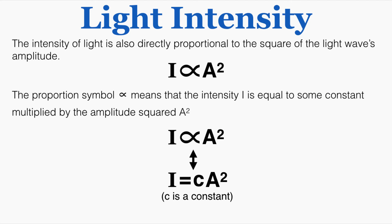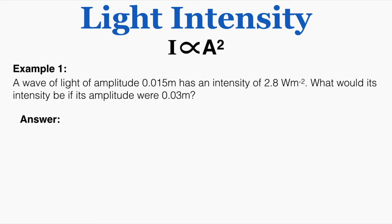The intensity of light is also directly proportional to the square of the light wave's amplitude. The proportionality symbol — a stretched-out alpha — means that intensity I equals some constant multiplied by amplitude squared (A²). That constant can change depending on the situation, and we can use this relationship to solve problems.